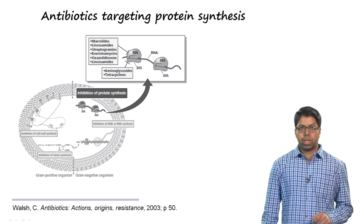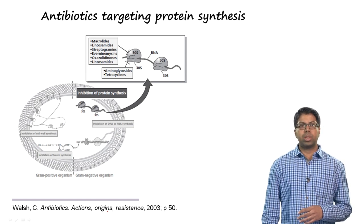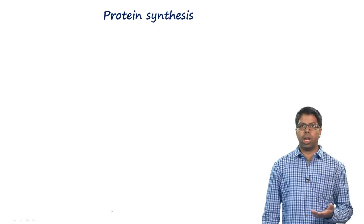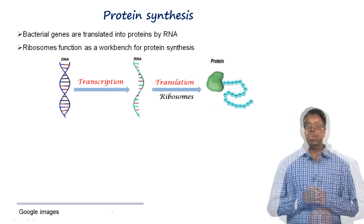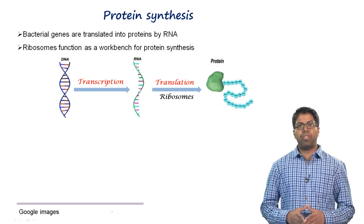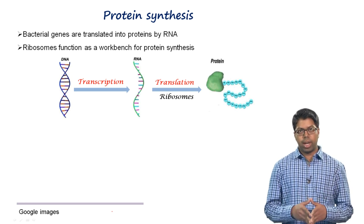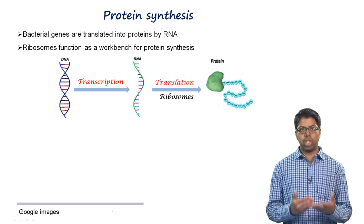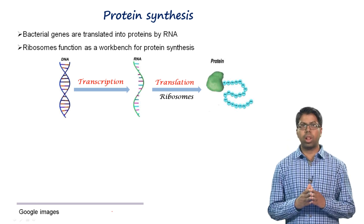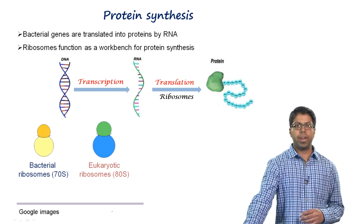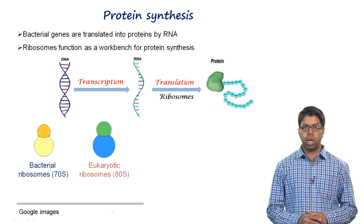Before discussing how antibiotics inhibit protein synthesis, let us briefly review ribosome function. Bacterial genes are translated into proteins by ribosomes, with mRNA carrying genetic information from DNA. Bacteria have 70S ribosomes whereas eukaryotes like humans have 80S ribosomes.